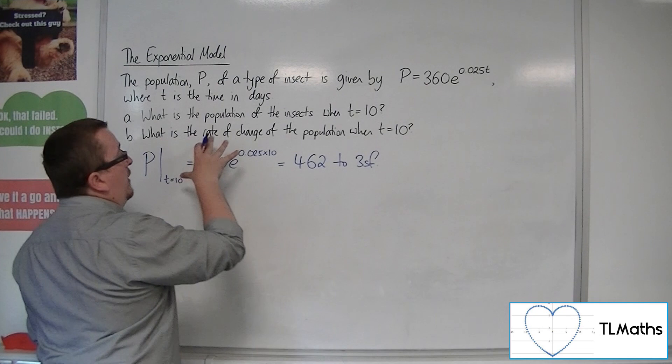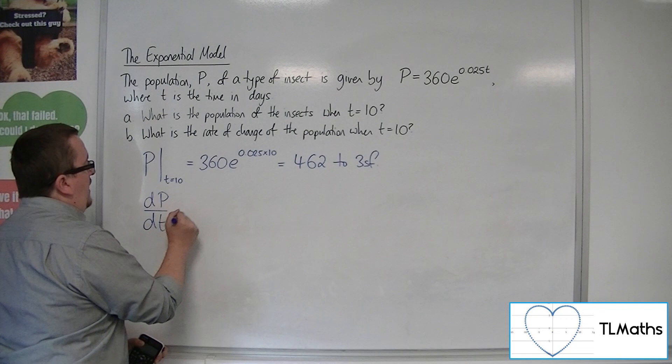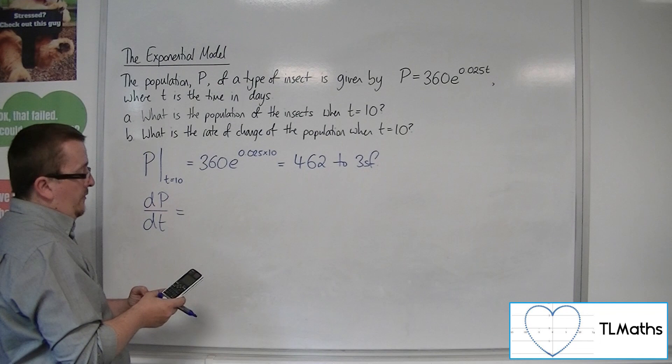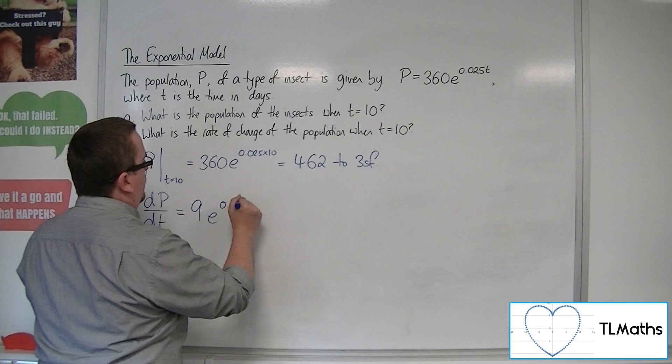So dP by dt, because these are the variables we're working with, will be 0.025 needs to come down to the front and multiply with the 360. So 360 times 0.025 is 9. So that's 9e to the 0.025t.